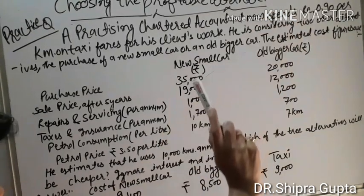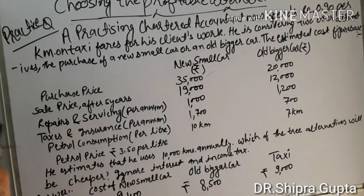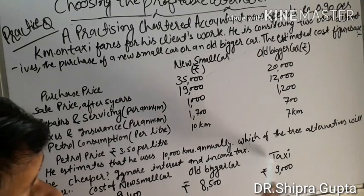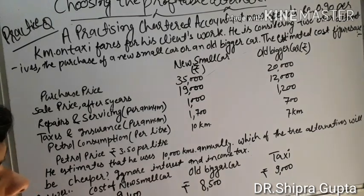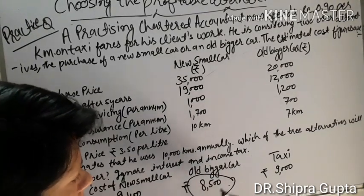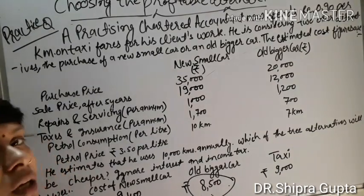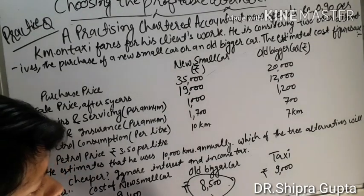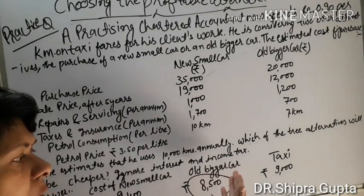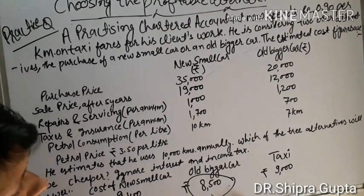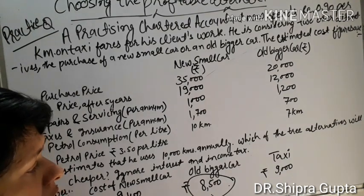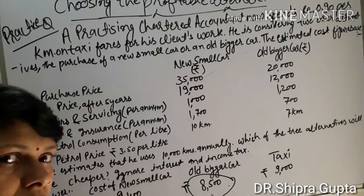The costs work out as: new small car ₹9,400; old bigger car ₹8,500; and taxi ₹9,000. Across all three alternatives, the best alternative is the old bigger car because its cost is lesser than the other alternatives. The comment will be: we should accept the proposal of the old bigger car at ₹8,500, as it is cheaper than the other alternatives. You will solve this question, and if you face any problem you can ask me.